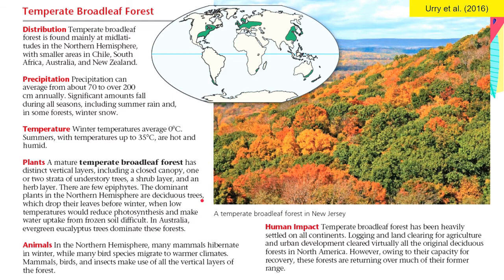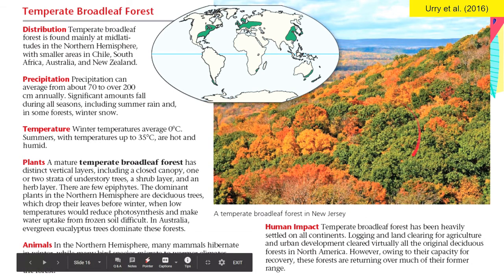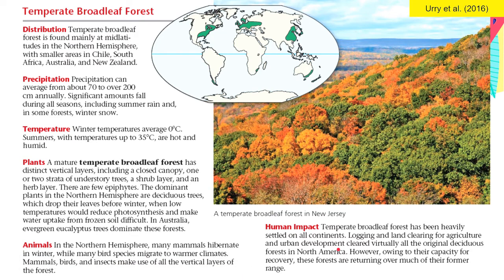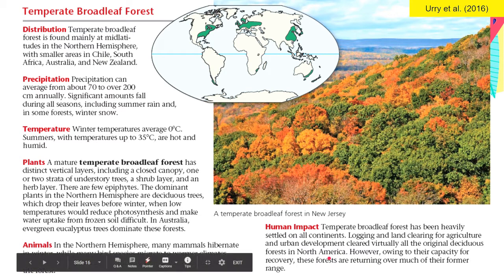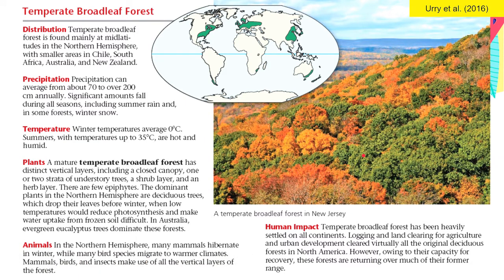The deciduous trees shed their leaves during autumn. The type of mammals that can survive here are mostly the ones capable of hibernating during winter, and bird species that can stay here actually migrate to warmer areas during winter. In terms of human impact, they are heavily settled in all continents. However, logging and land clearing for agriculture and urban development has cleared a lot of these forested areas. Due to their ability to recover through ecological succession, these forests are returning to their former status and range.